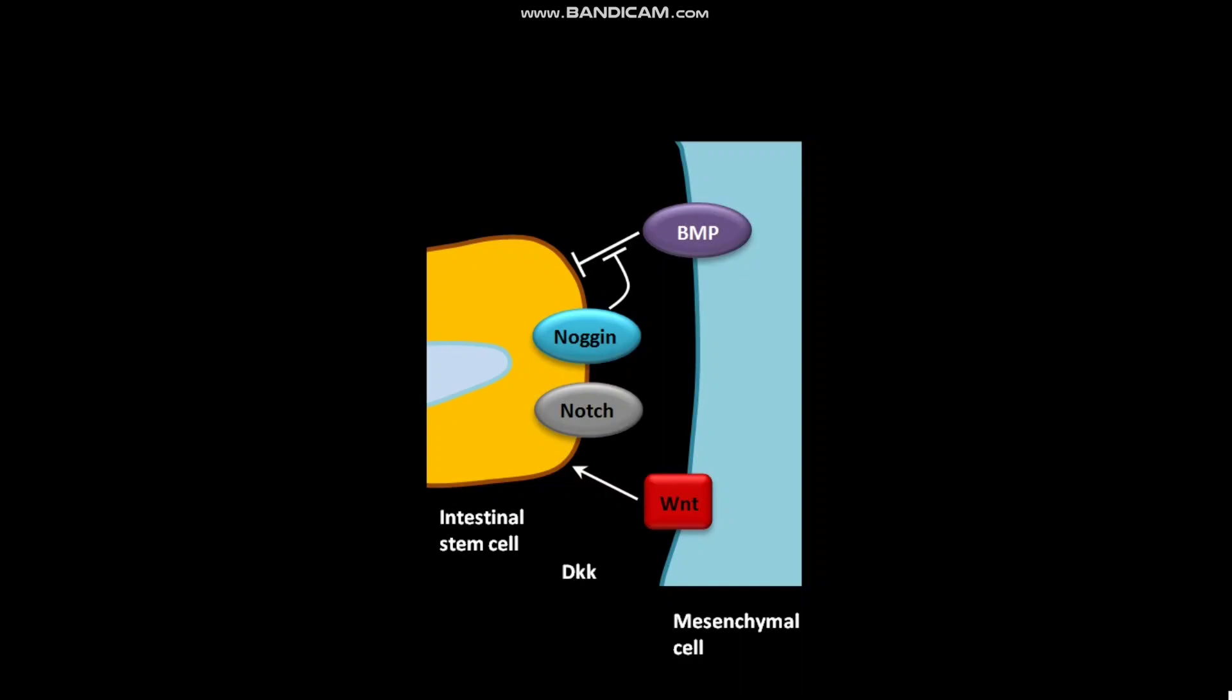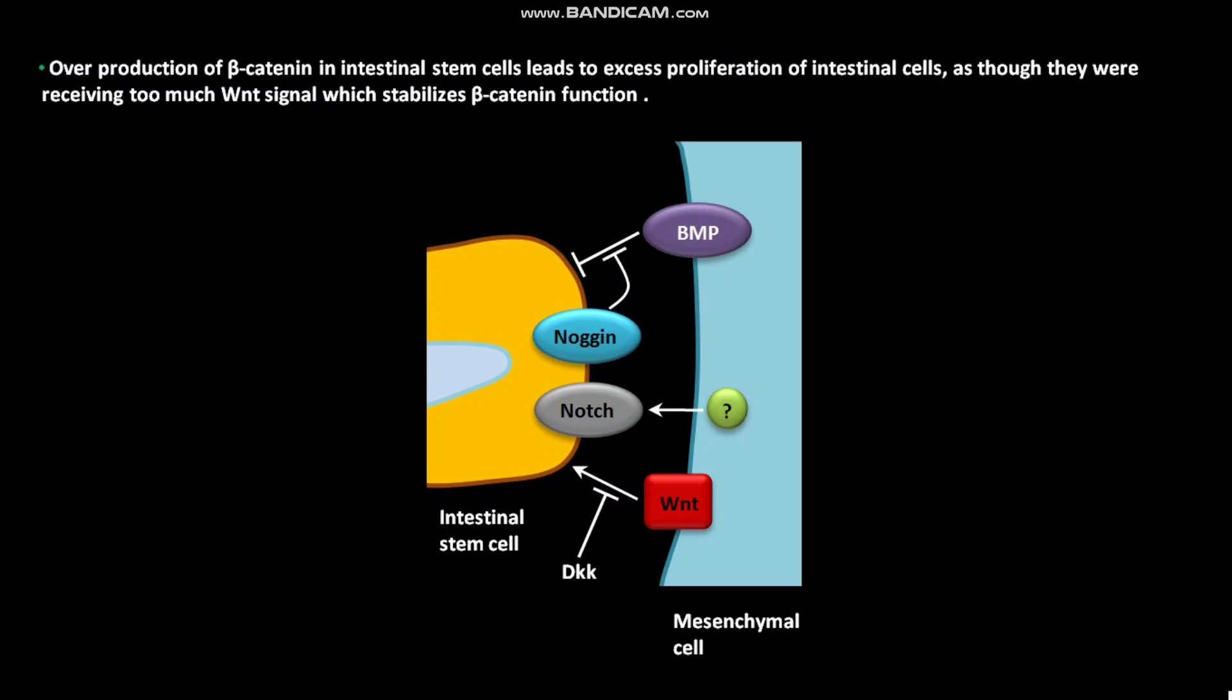When growth is not needed, DKK blocks WNT signaling. The Notch receptor is also involved in the signaling events, but the ligand of Notch receptor on mesenchymal cell is not known. Overproduction of beta-catenin in intestinal stem cells leads to excess proliferation of intestinal cells as though they were receiving too much WNT signal which stabilizes beta-catenin function.